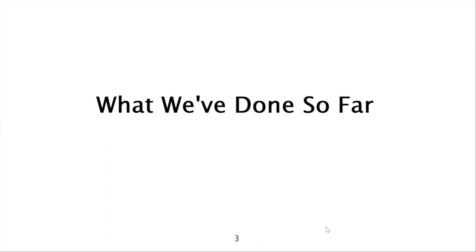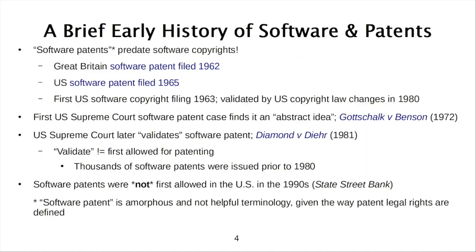I'd like to start talking about the history of patent law in the United States and how it relates to open source software, starting with a brief early history of software and patents. Many people think that patents and software really only came into being in the 90s — that is completely incorrect. In fact, software patents predate software copyrights in terms of the first filings of those two forms of intellectual property related to software. Software patents really only got their first test in the 70s in the United States courts — there's a case called Gottschalk v. Benson, which is really the first patent-related case related to software. In that case, the Supreme Court found that the specific patent was related to an abstract idea and was not patentable.